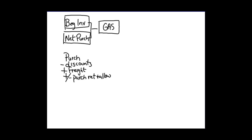When you have goods available to sell to your customers, you either sell them — and when they're sold, that becomes cost of goods sold — or you still have them left on hand at the end of the year, which would be your ending inventory.